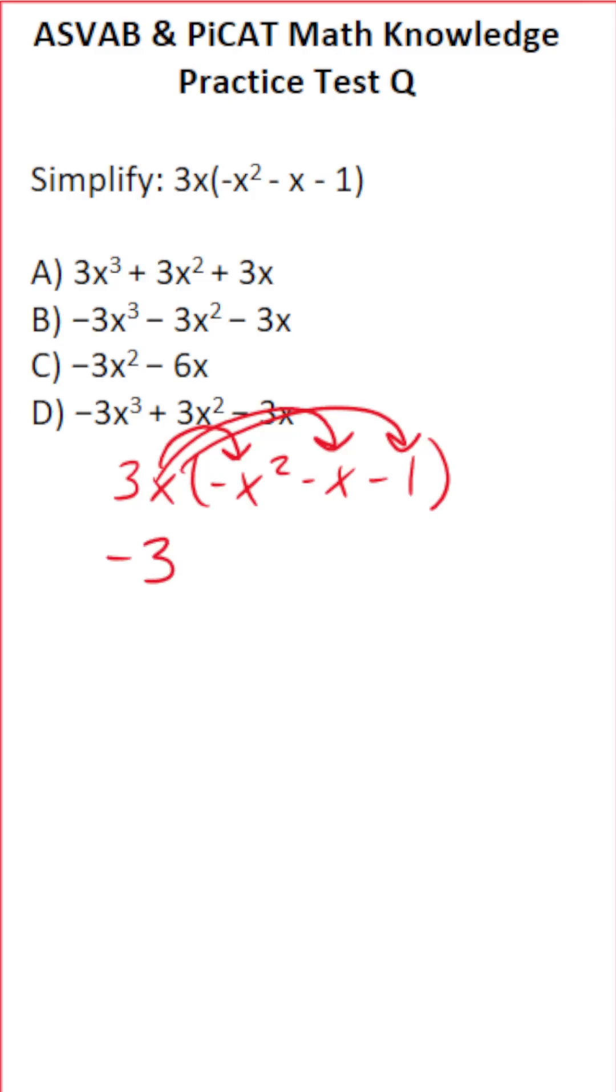If you haven't multiplied polynomials in a long time, for this one we have to follow one of the laws of exponents called the product rule. The product rule says if you have a to the m times a to the n, that's equal to a to the m plus n.